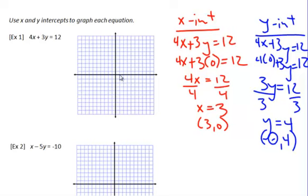So now we plot it. (3, 0) is right here, and (0, 4) is right here. And this gives us a nice negative slope.